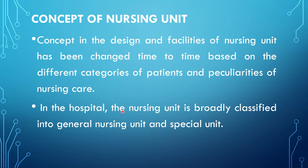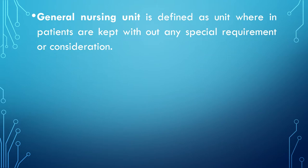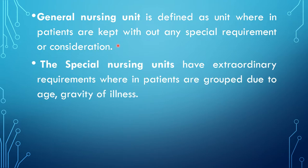In a hospital, the nursing unit is broadly classified into two: general nursing unit and special nursing unit. A general nursing unit is defined as a unit wherein patients are kept without any special requirement or consideration. In a special nursing unit, there are patients with extraordinary requirements, and patients are grouped due to their age, gravity of illness, etc.